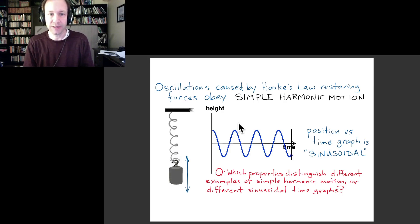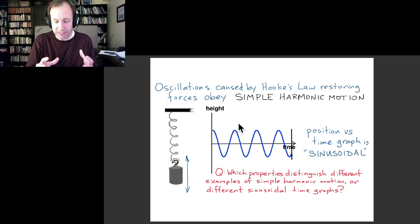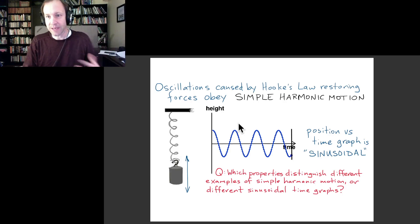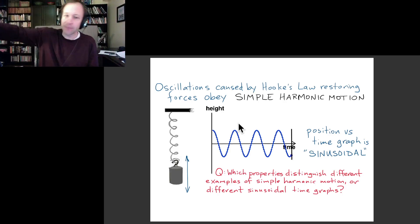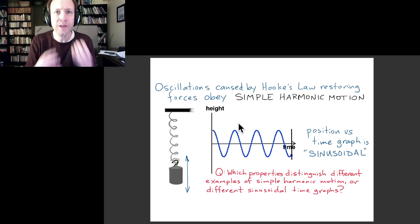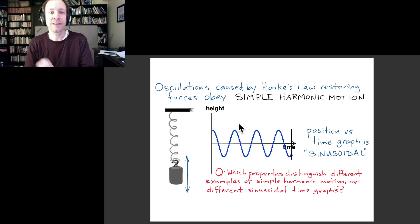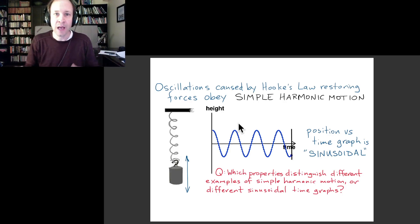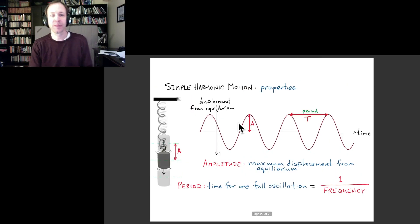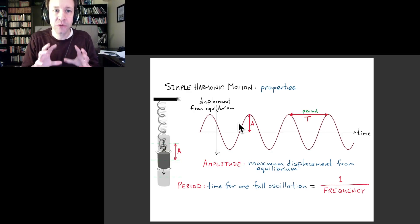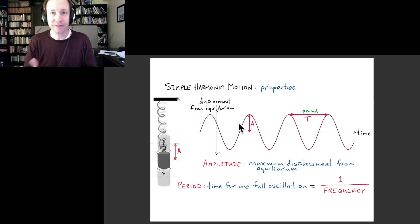Next, we want to talk about the properties of sinusoidal functions that would distinguish one kind of simple harmonic motion from another. Suppose I have one mass on one particular spring and a different mass on a different spring, and I set them both moving — what are the ways those motions would be different? If I made time graphs of those two different motions, what would be the different ways those time graphs could differ from one another? Pause the video and think about that.